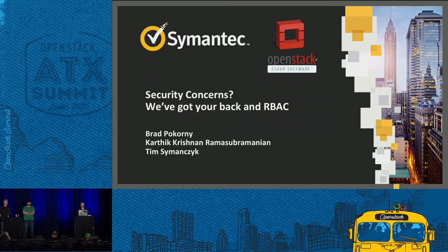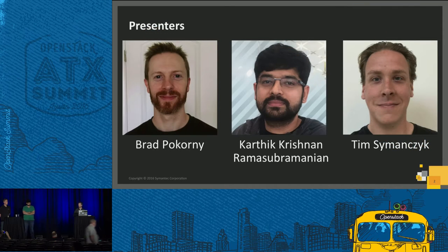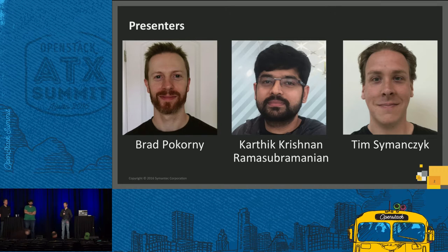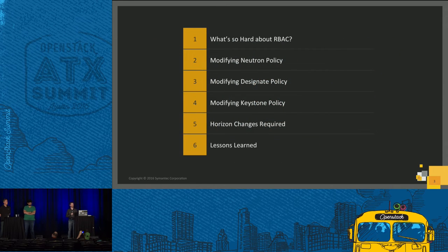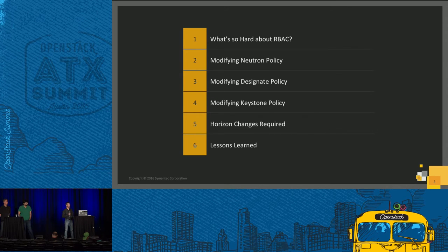We'll have about five or ten minutes for questions. So this is us — we all work for Symantec. I'm Brad, I work primarily on Horizon. This is Karthik, he works on our SDN solution, and Tim who works on Keystone. This is our agenda for today: first we'll talk about why it's so hard to implement RBAC, then we'll go through modifying the Neutron policy, the Designate policy, the Keystone policy, the Horizon changes we had to make, and then the lessons learned along the way.